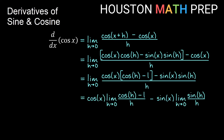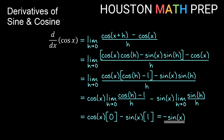Splitting the fractions, we have cosine x times the limit as h→0 of (cosine h minus 1) over h, minus sine x times the limit as h→0 of sine h over h. Using the same limits as before — the first equals zero and the second equals one — we get cosine x times zero minus sine x times one, which gives us negative sine x.